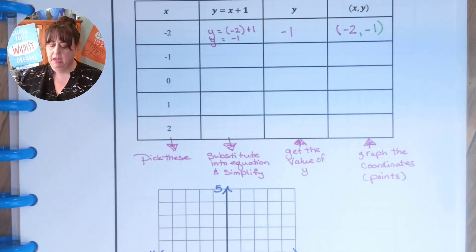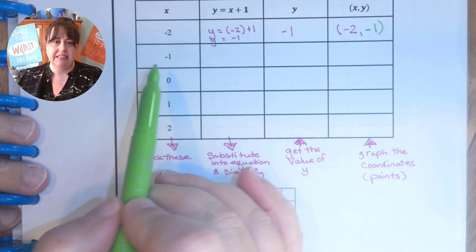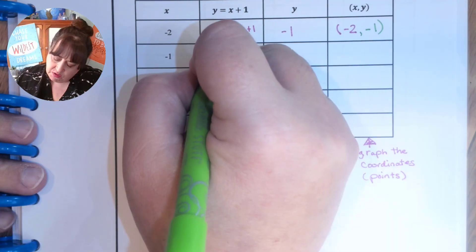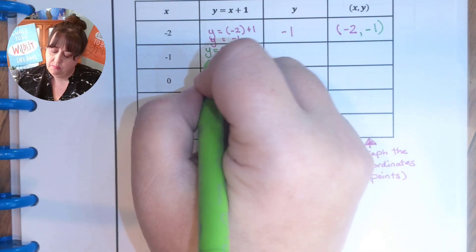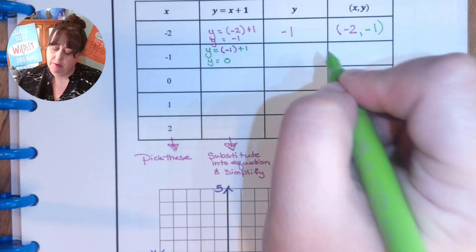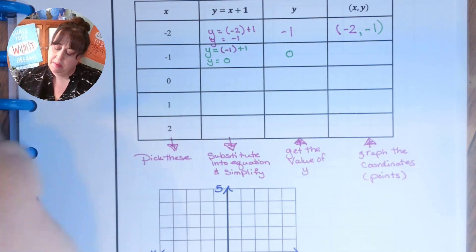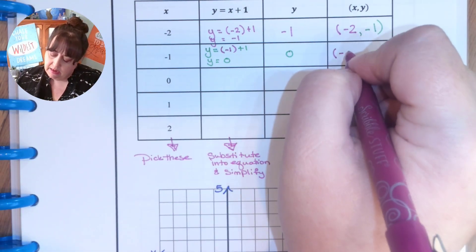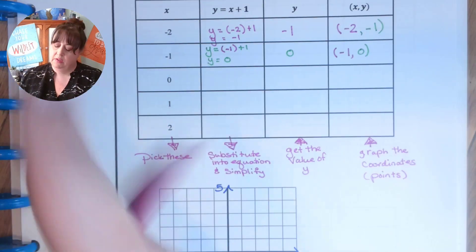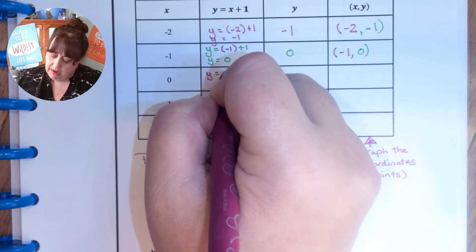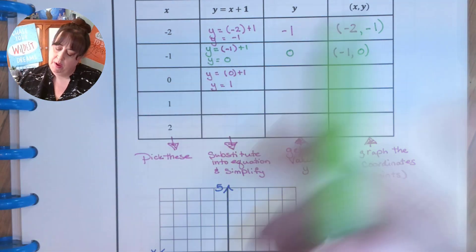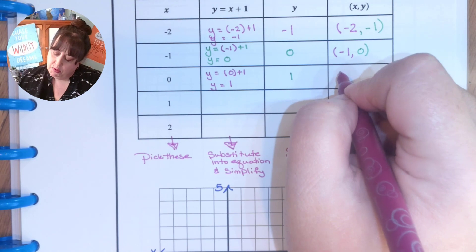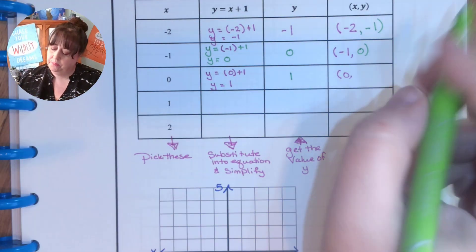I'm going to show a different color so you can tell the difference. Every time I see an x, I'm going to put negative one now. So y equals negative one plus one, which is zero. So y is zero and my point is negative one, zero. Next one: y equals zero plus one, so y is one. So this is the point zero, one.